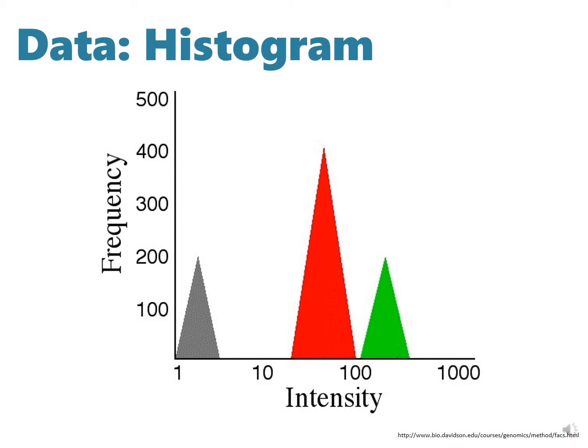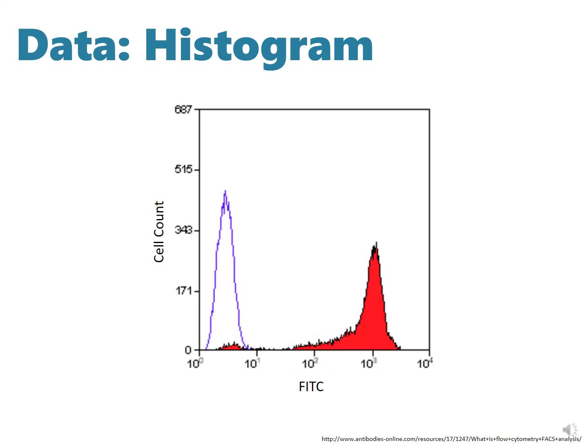Histograms aren't always the best way to visualize data with multiple labels on a population. That's when we use dot plots or contour plots. In this diagram, we see a certain cell population tagged with FITC where we get the cell count, and the blue graph gives us the negative control of this experiment.